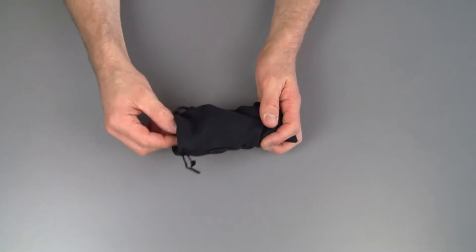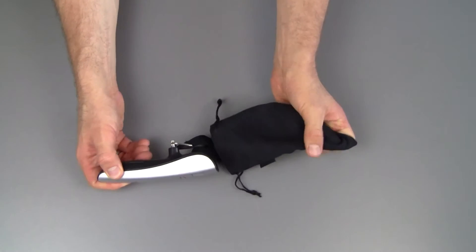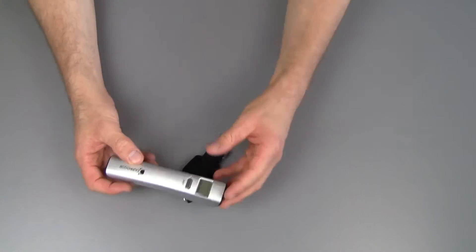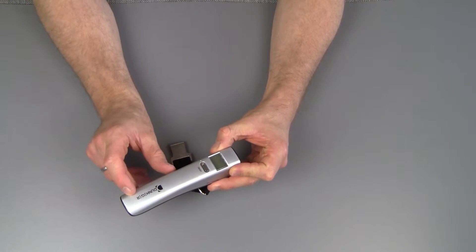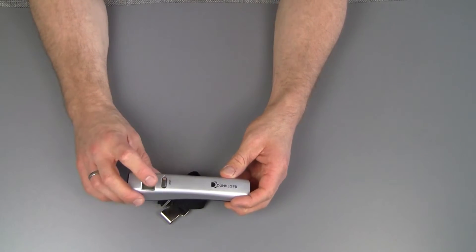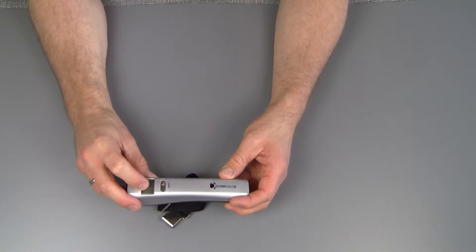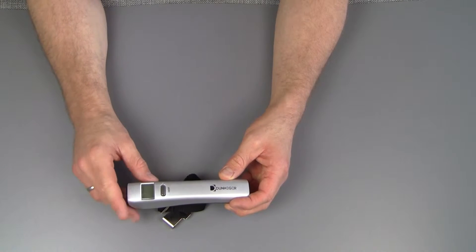So let's get the scale out of the pouch and see what's what. Here we are in nice and shiny grey. We got the Dunhager logo up here. The on and off button and a little display that will indicate the weight.